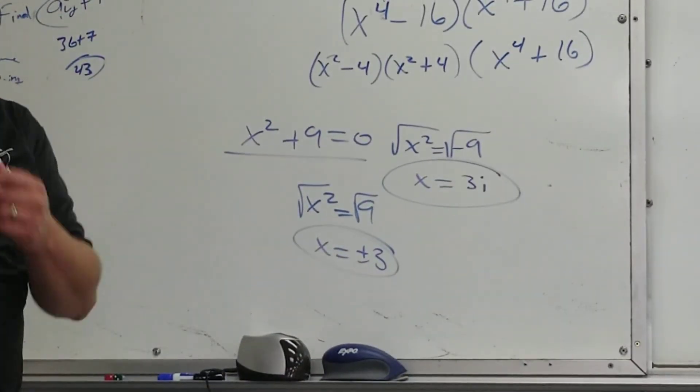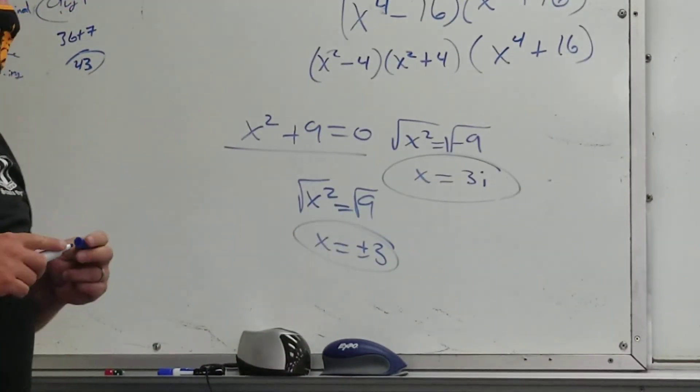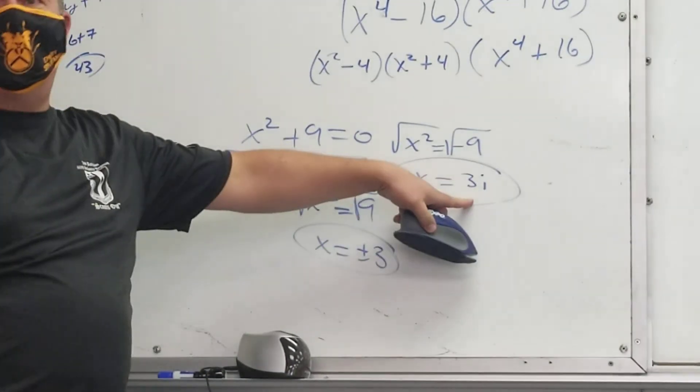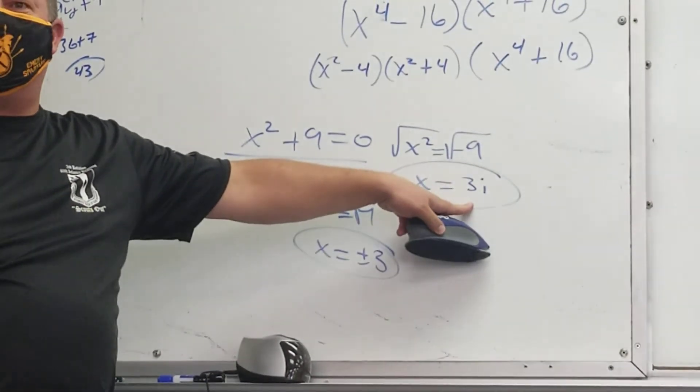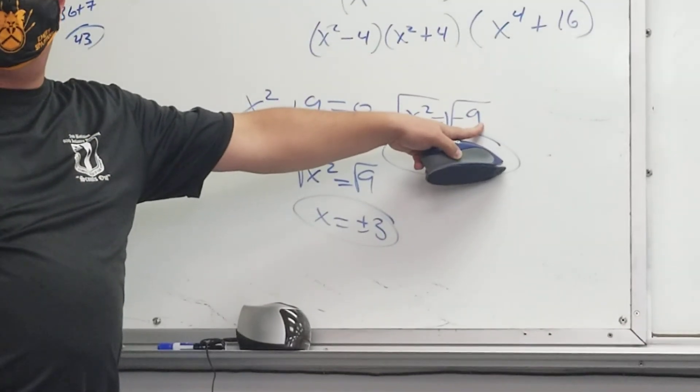Really, this is 3i. Because that's the imaginary number. Square root of negative 1. And we'll get into those later, complex numbers. But, so it's a number, but it's not a real number, right? It's an imaginary number. But, so can I really take the square root of a negative in real numbers? No.